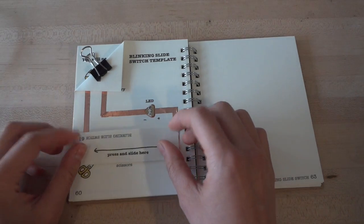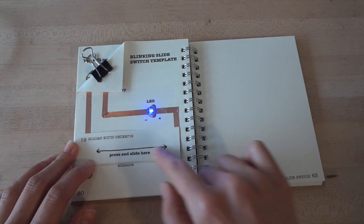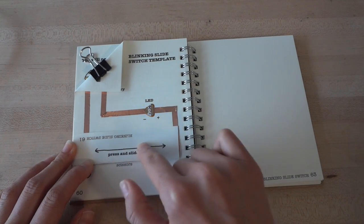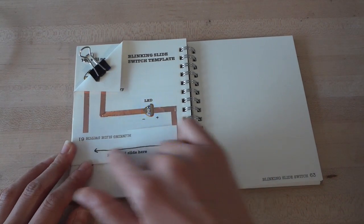Finally, fold the flap along the dotted line again. Now, when you press against certain points in this flap, you turn on the switch. When you slide your finger across, you create a blinking pattern.